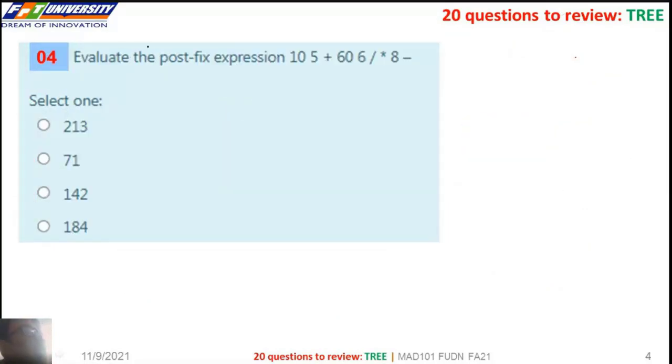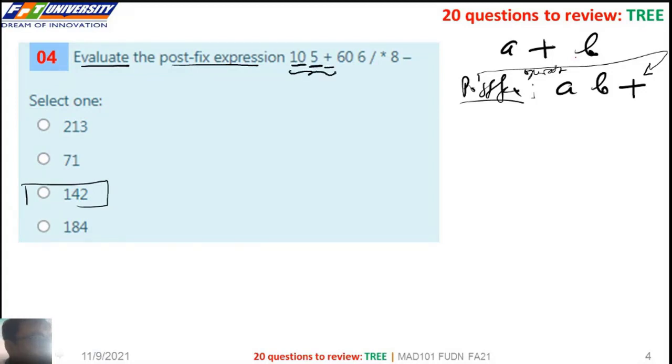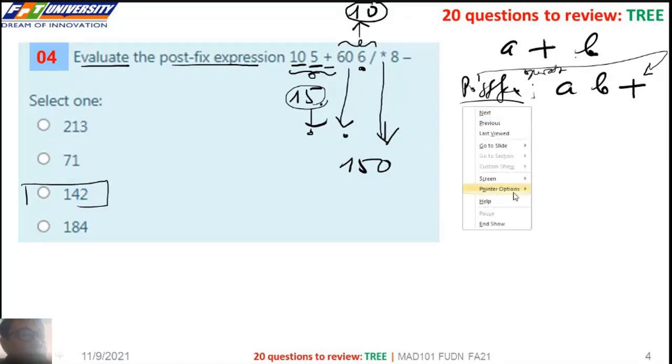The next question. Did you know the postfix expression? If we have A plus B, so in postfix we have A, B, and plus. The operator is in the back. To evaluate the postfix expression, we take here, we take here, we take here and do the operation here. So we have 15. So 15 and 60, and here 6. So now we have to take the division here, we have the result 10. And here we have 10, and here we have 50. We have the multiplication here. So we have 150 here, and then minus 8.